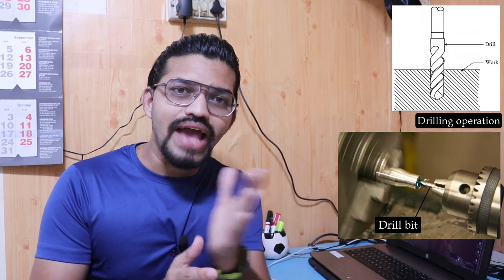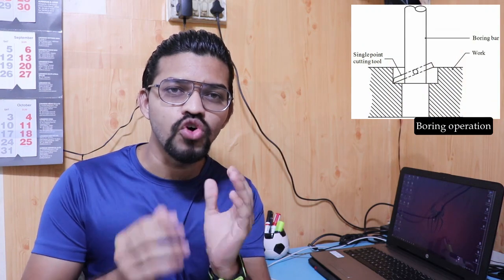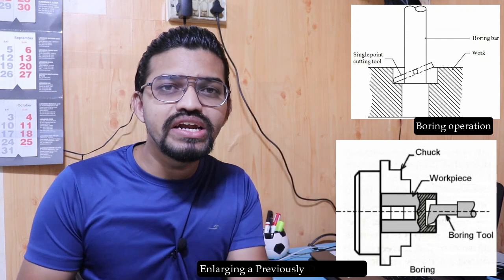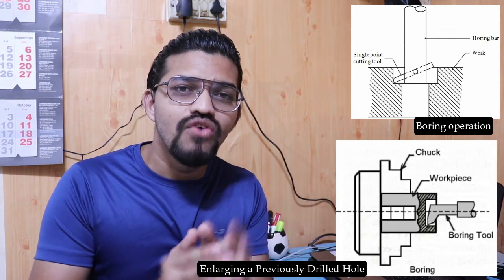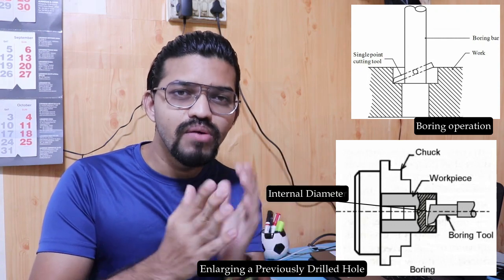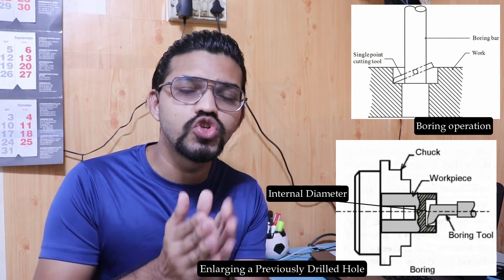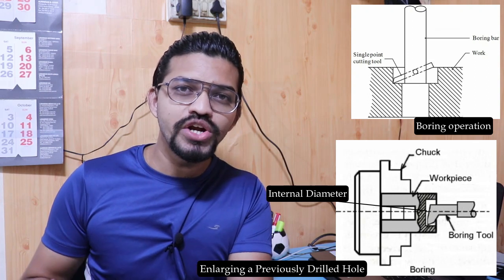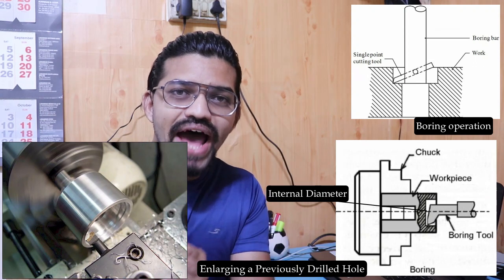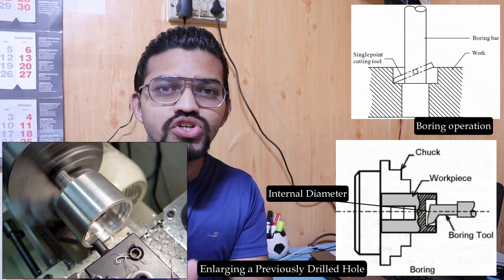After drilling, the boring operation can be performed. Boring involves enlarging a previously drilled hole — increasing the inner diameter (ID) — using a boring tool. The boring tool is held in the tool post and a feed is given parallel to the axis of rotation to enlarge the hole on the workpiece.